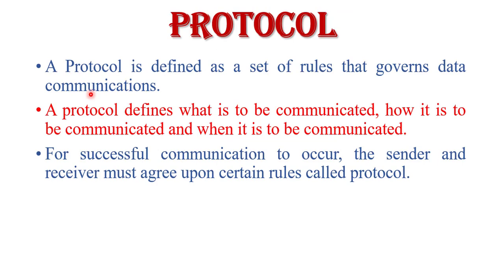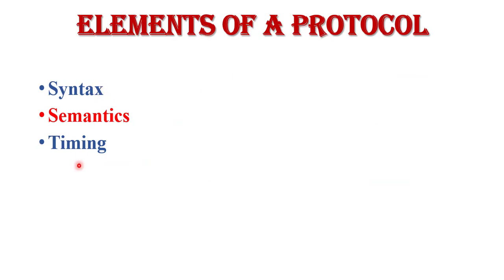Next is protocol. Protocol is a set of rules or regulations that governs data communication. A protocol defines what is to be communicated, how it is to be communicated, and when it is to be communicated. For successful communication, the sender and receiver must agree upon certain rules and regulations — that is called protocol. There are three elements of protocol: syntax, semantics, and timing. Syntax is the format or structure of the data. Semantics tells the meaning of each section of bits and indicates what action or decision is to be taken. Timing tells the sender about the readiness of the receiver and at what rate data should be sent to avoid overwhelming the receiver.